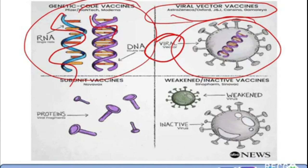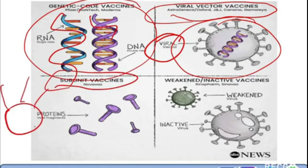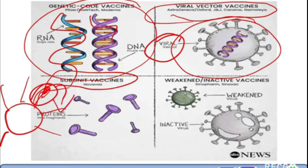What are subunit vaccines? Novavax has developed a subunit vaccine. For example, in the coronavirus you can see the spikes — these spikes are nothing but proteins. These proteins are extracted and used in the vaccine to trigger our antibody response. This is a subunit vaccine — that is Novavax.